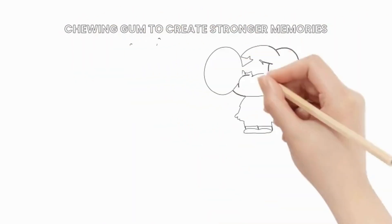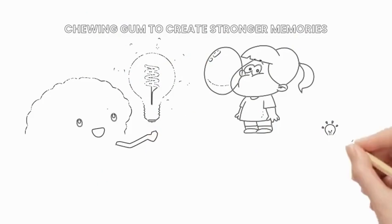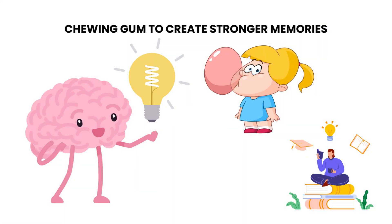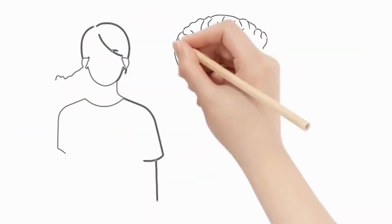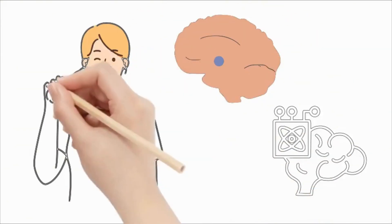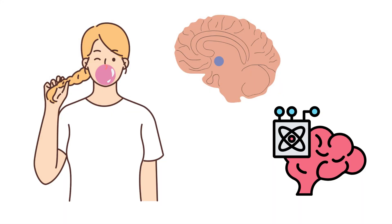Chewing gum to create stronger memories: An easy method to improve your memory is to chew gum while learning new things. There are currently two reasons cited to explain this. Chewing gum can increase activity in the hippocampus, an important area of the brain responsible for memory retention.